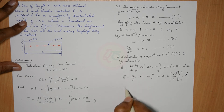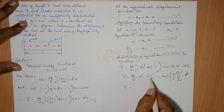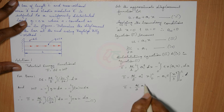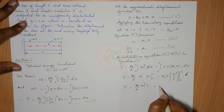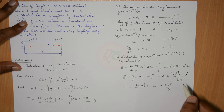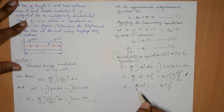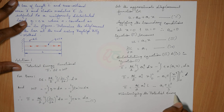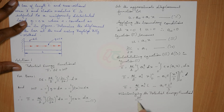Therefore pi equals AE/2 times A1² L, minus A1 C L³/3. This is the final expression for the potential energy. The next step is to minimize this potential energy functional. Setting the variation to zero, we apply the condition ∂π/∂A1 equals 0.